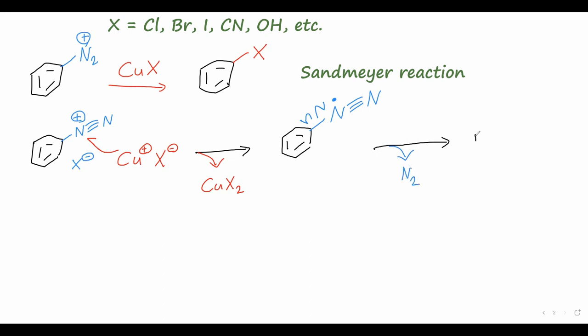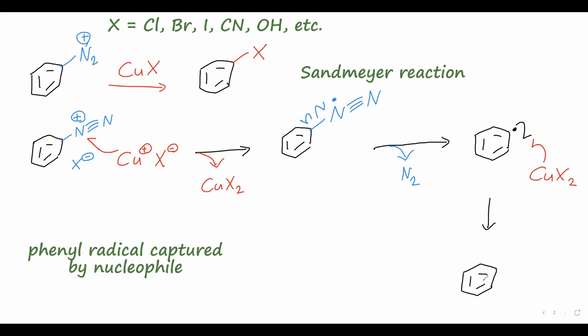However instead of making a phenyl cation, where we have a full positive charge on the benzene ring, it actually makes a phenyl radical, so now we have this benzene ring with one electron on one of these carbons, and a neutral overall formal charge. Now we take our CuX2 species that we formed earlier, and the copper will donate another one of its electrons to form a bond to that benzene ring, and we will have this radical electron come over to form that bond. That makes this last intermediate here, with the copper bonded to the benzene ring.